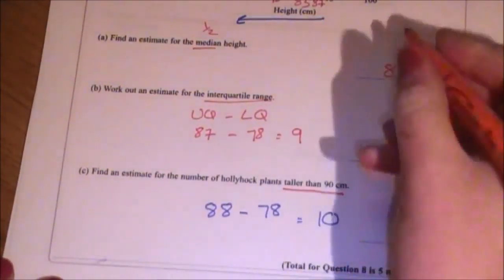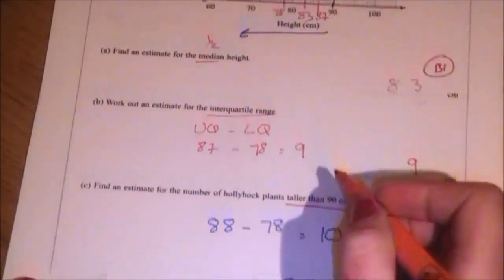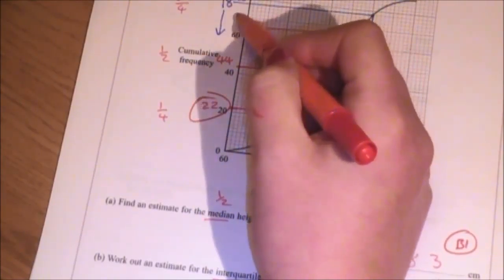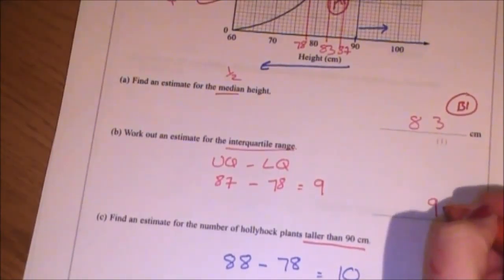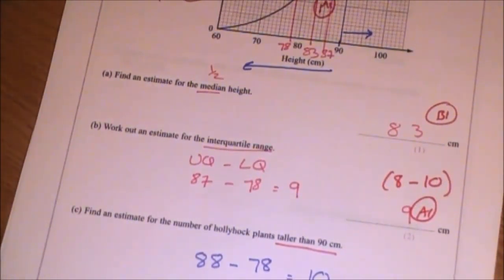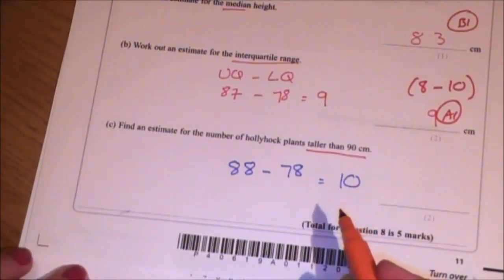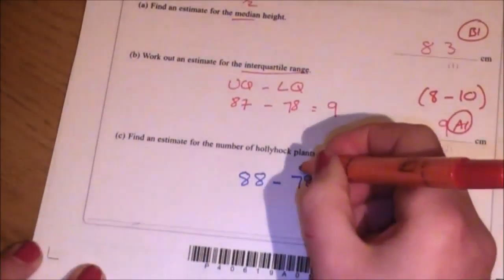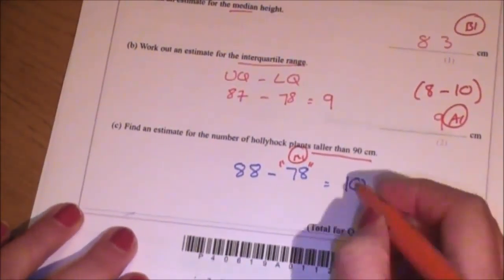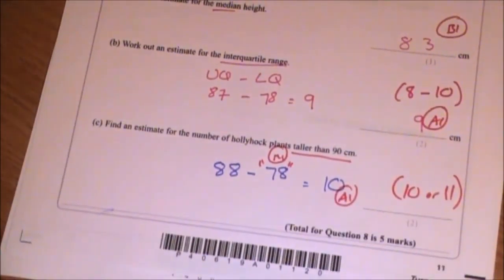With regards to mark schemes here, you get a B1 mark for just knowing how to find the median. You get an M1 mark here for drawing the lines at the correct quartiles. So that's the 22 and the 66 line. And then here you get an answer mark. The mark scheme does actually accept anything from 8 to 10 because you may have drawn lines to a different degree of accuracy. And here it's a two marker. You get one mark for showing that you've used or identified that 78 coming off the 90, and then you get the second mark for having the answer correct. And here they'll accept 10 or 11, again based on how accurate your graph was.